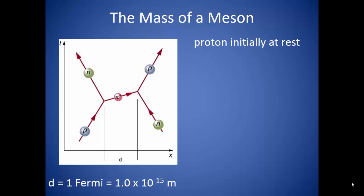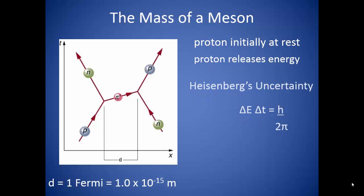To make our calculations a little bit easier, we are going to assume that our proton is initially at rest. Now since the meson is itself energy, in order for the proton to release the meson, it must release some energy. If the proton is at rest, it does not have kinetic energy. This is where the uncertainty principle comes in.